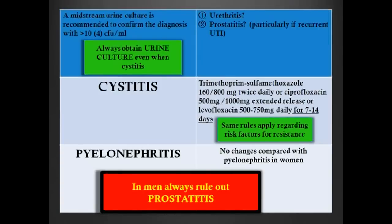UTI in men: as discussed, traditionally was considered complicated. Now many articles say sex itself is not a factor for complication. The recommended breakpoint to diagnose UTI in men is a midstream urine culture with 10^4 colonies. Always obtain urine cultures in men. Always rule out urethritis — gonococcal, non-gonococcal, chlamydia — and prostatitis. If you have recurrent UTI in men, rule out chronic bacterial prostatitis.